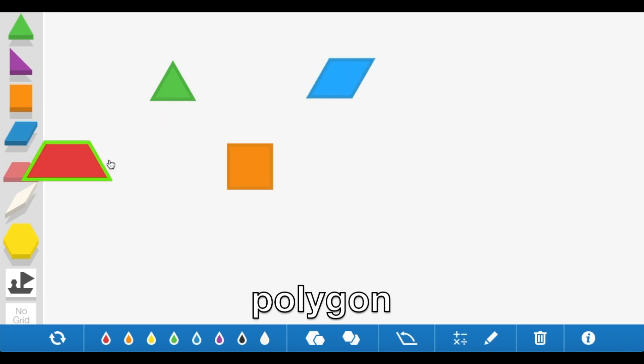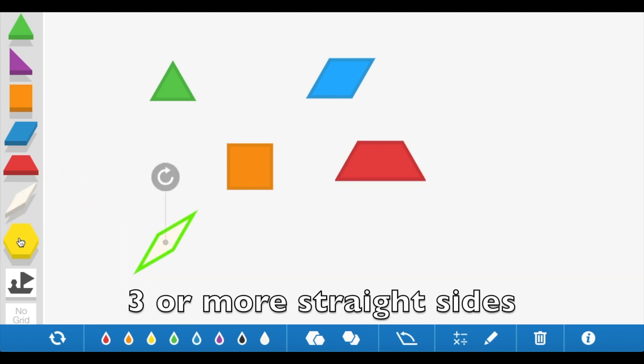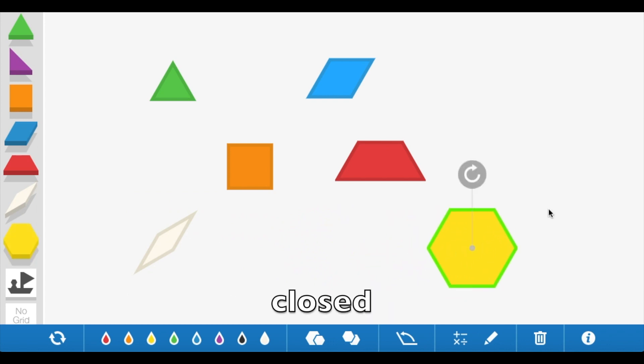A polygon is a shape that is flat, it has three or more straight sides, and it is closed, which means the sides all meet at the corners.